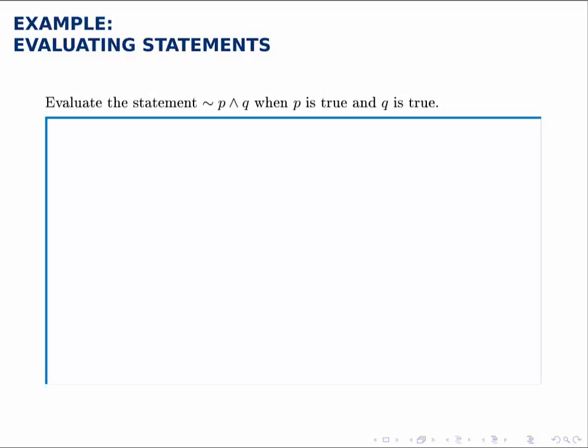So we'll do the same thing here, except the values for P and Q could be true or false. In this case, we're given that both of them is true, so I write not P and Q, and I replace each of them with their truth values, so not true and true.